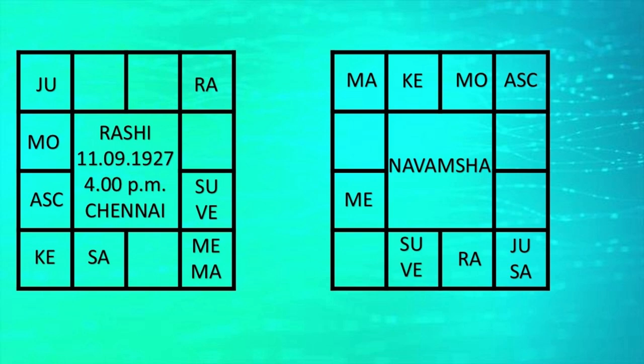I often reiterate these points in my videos. You can take a look at the Navamsha chart that is displayed on the screen. When you are checking the Subhatwa of a planet you have to definitely check Navamsha as well. In order to check the intensity of Subhatwa, you have to check Navamsha. So though we can identify Subhatwa of the planet in the Rashi chart, it is necessary to check the Navamsha chart as well.